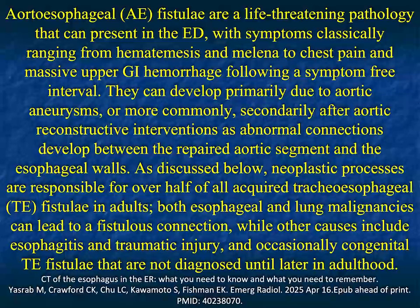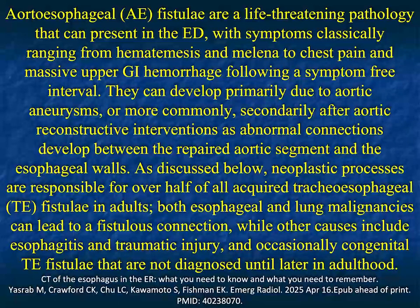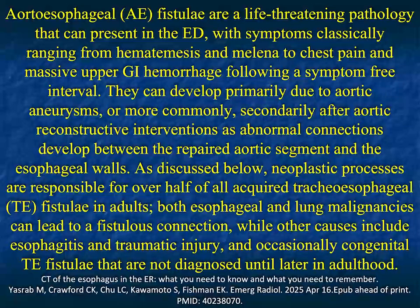Some esophageal processes are truly life-threatening. One is aorto-esophageal fistula. Fortunately most patients don't develop fistulas between the esophagus and the aorta or trachea and the aorta, but they can occur — due to tumor, trauma, aortic aneurysms, or surgery. Neoplastic processes are responsible for over half of acquired TE fistulas in adults; both esophageal and lung malignancies can lead to fistulas, while other causes include esophagitis and traumatic injury. Congenital TE fistulas also exist but are usually diagnosed early in life.